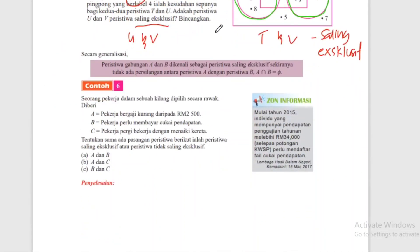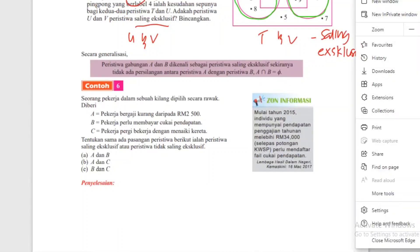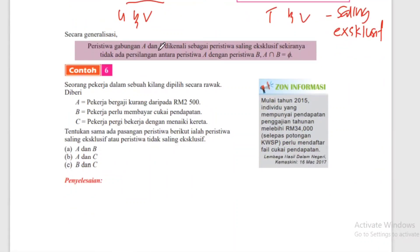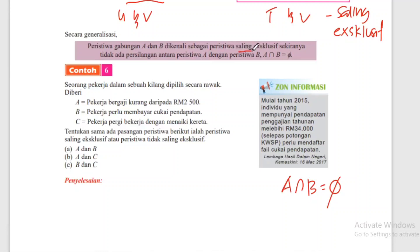Secara generalisasi: peristiwa gabungan A dan B dikenali sebagai peristiwa saling eksklusif sekiranya tidak ada persilangan antara peristiwa A dan peristiwa B. Maksudnya A bersilang dengan B = set kosong (empty set). Tiada persilangan, kita panggil dia peristiwa saling eksklusif.